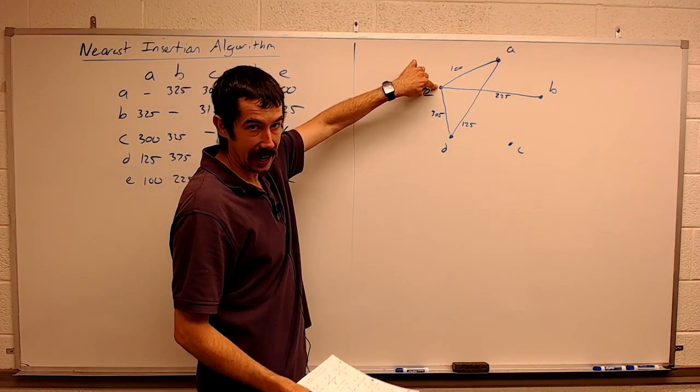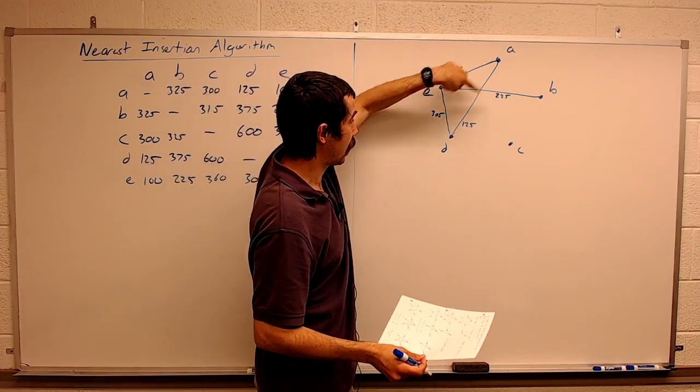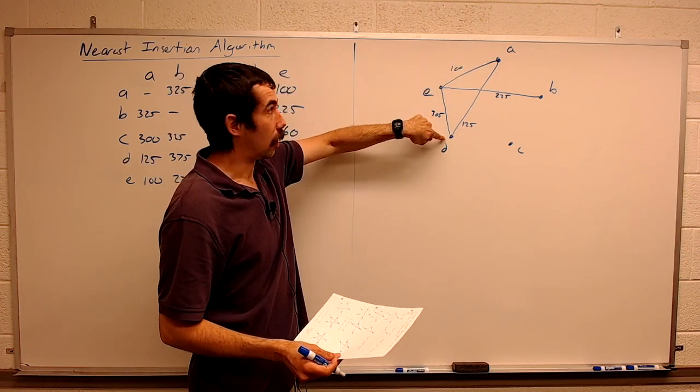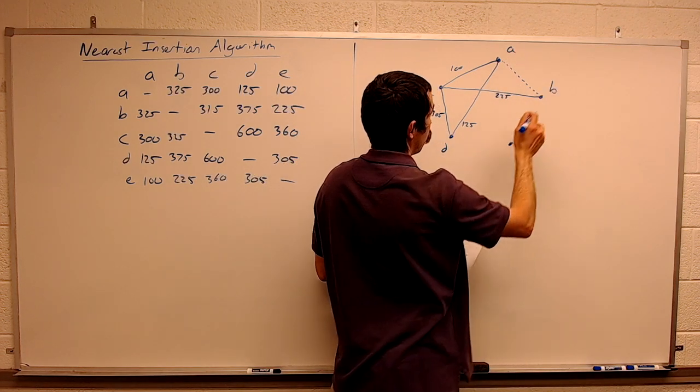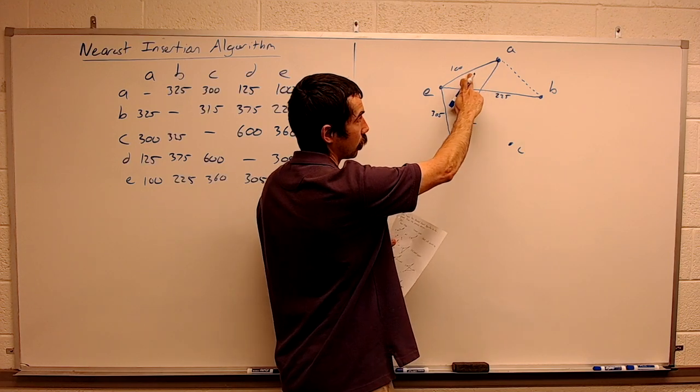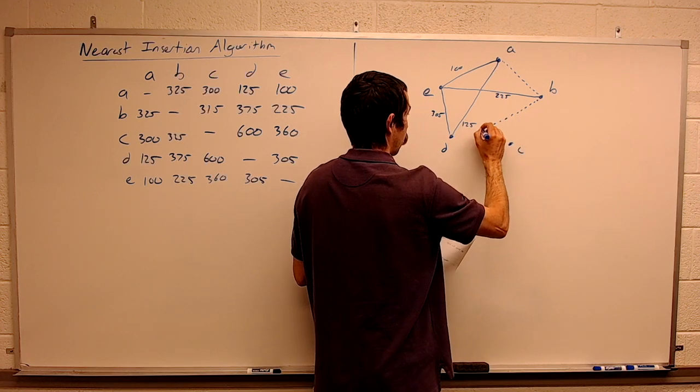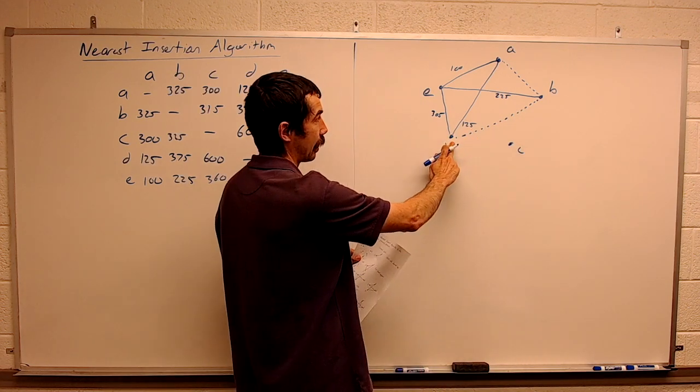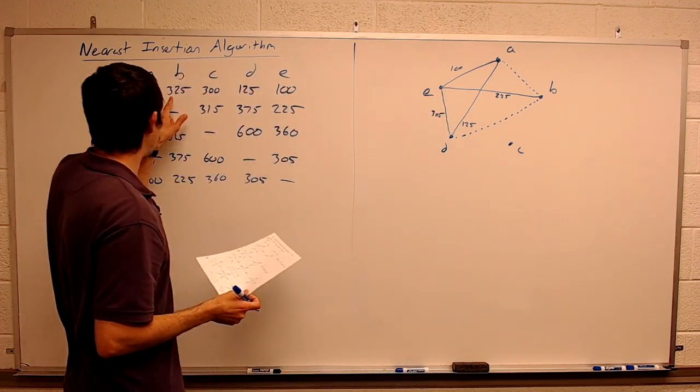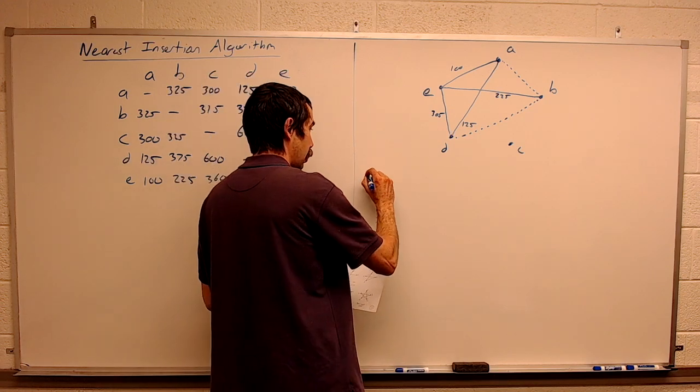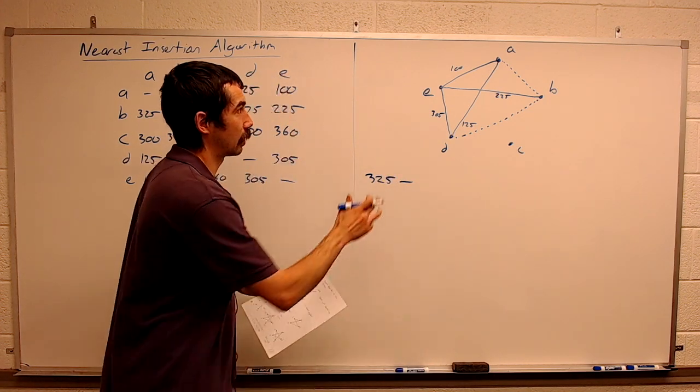So we look at E, and its two neighbors in our cycle so far, which are A and D. And so we might include this edge and get rid of this edge, or we might include this edge and get rid of that edge. So what is AB? AB is 325. So one option is add 325 and subtract 100.